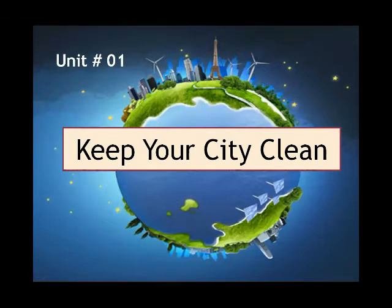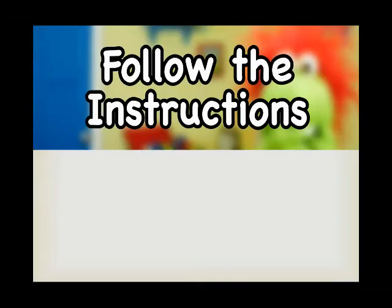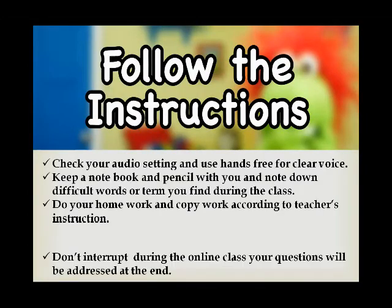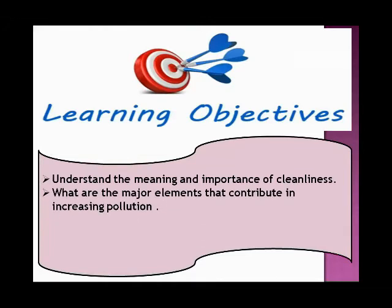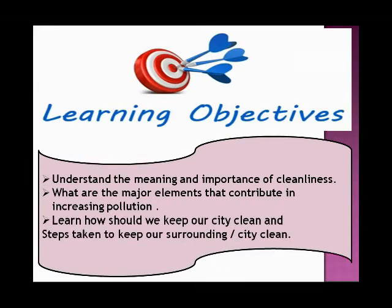I'm giving you a quick review of the chapter before sharing the question answers with you. Our learning objectives are: understand the meaning and importance of cleanliness; identify the major elements that contribute to increasing pollution; and learn how we should keep our city clean and what steps are taken to keep our surroundings or city clean. These are our learning objectives for Unit 1, 'Keep Your City Clean.'